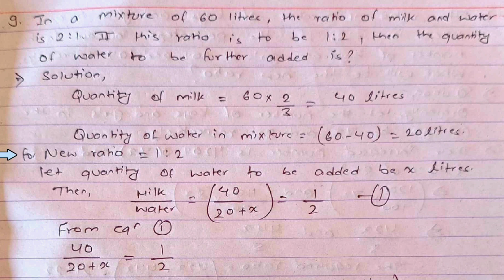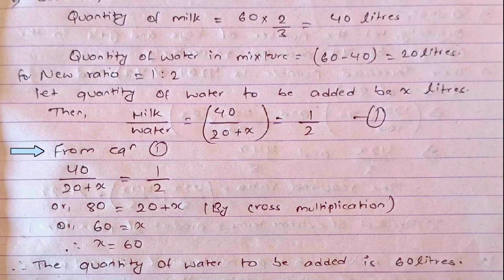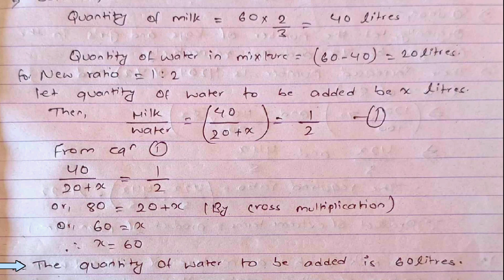The new ratio of milk to water is 1 : 2. So milk / water = 40 / (20 + x) = 1/2. By cross multiplication: 80 = 20 + x, therefore x = 80 − 20 = 60 liters. So the quantity of water to be added to achieve the new ratio of 1 : 2 is 60 liters.